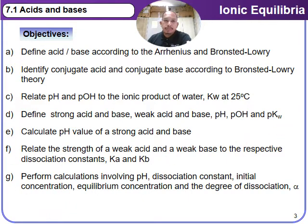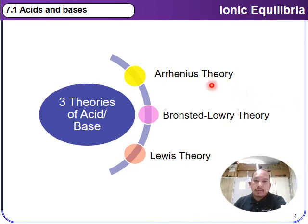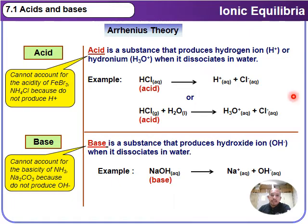Let us begin. For acids and bases, there are three theories: the Arrhenius theory, the Brønsted-Lowry theory, and the Lewis theory. We begin with the Arrhenius theory. Arrhenius states that an acid is a substance that produces a hydrogen ion, H⁺, or hydronium ion, H₃O⁺, when it dissociates in water.